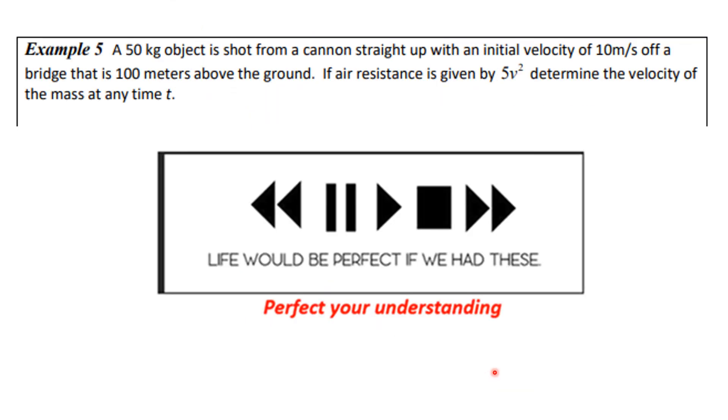Here's another problem. This will be a different kind of problem. A 50 kilogram object is shot from a cannon straight up with an initial velocity of 10 meters per second off a bridge that is 100 meters off the ground. If air resistance is given by 5v squared, you see the faster you're going, the more air resistance there is. This is heavy air, I guess. Determine the velocity of the mass at any time t. And the important thing to realize is sometimes it's going up and sometimes it's going down. So you know what to do. And let's see how you did.